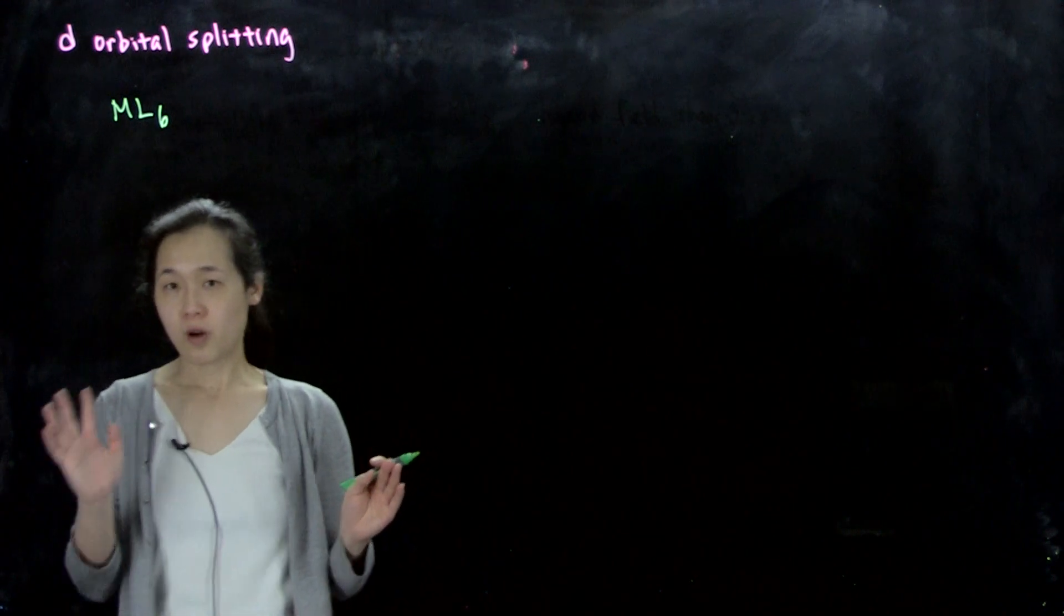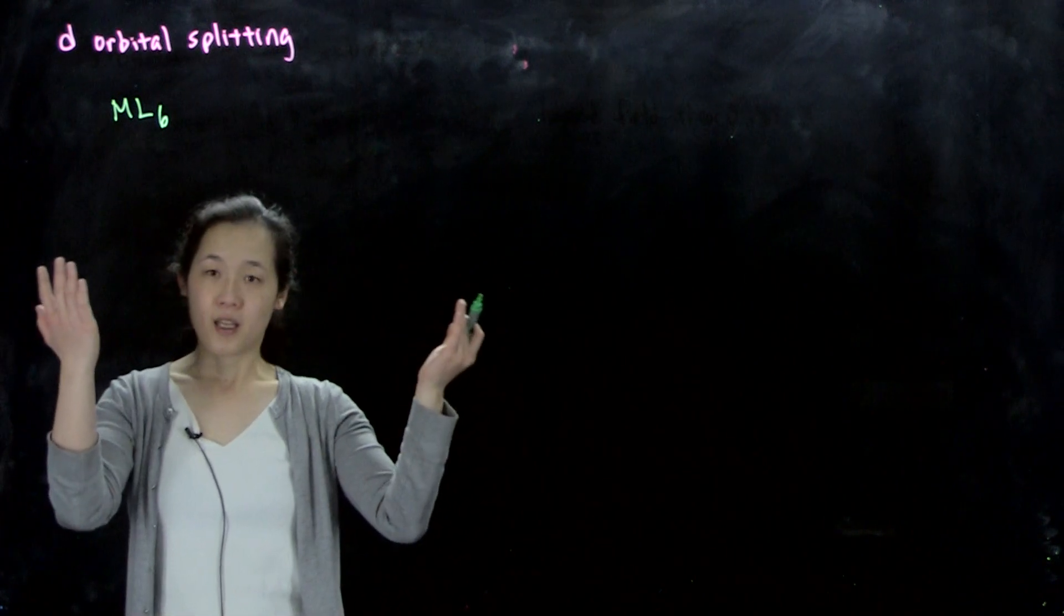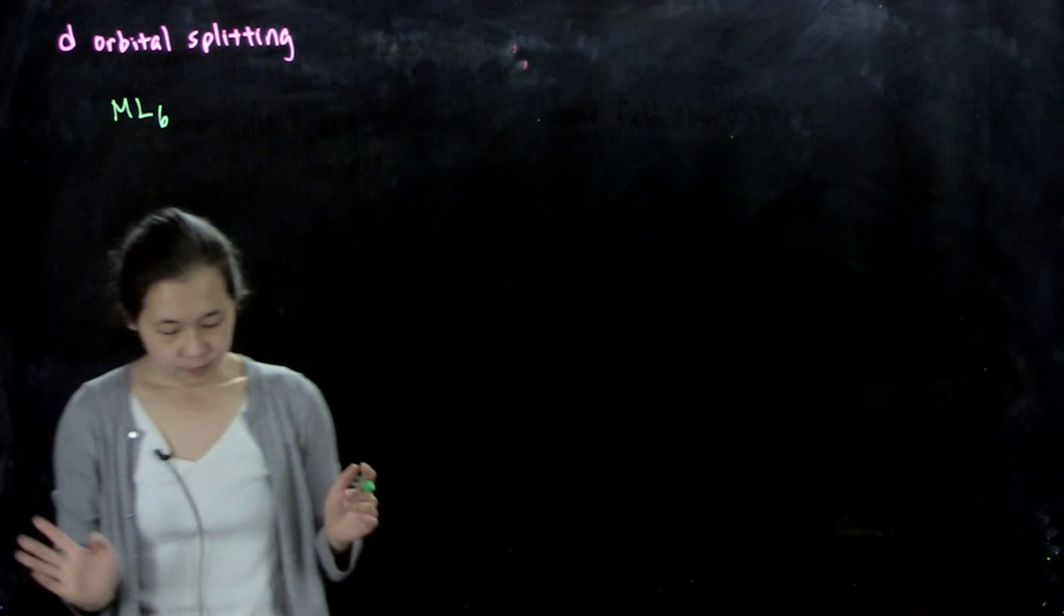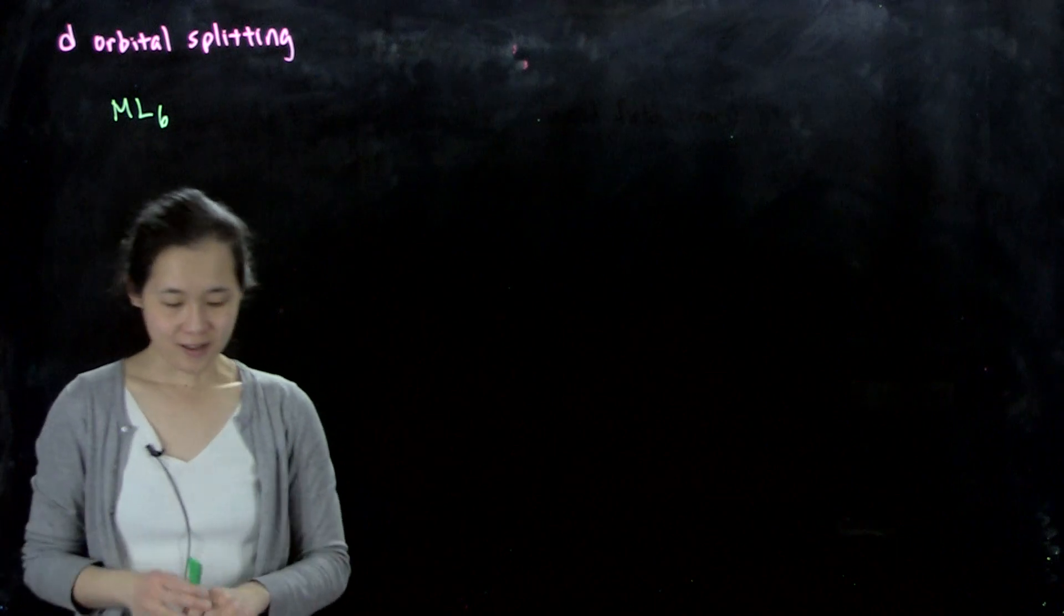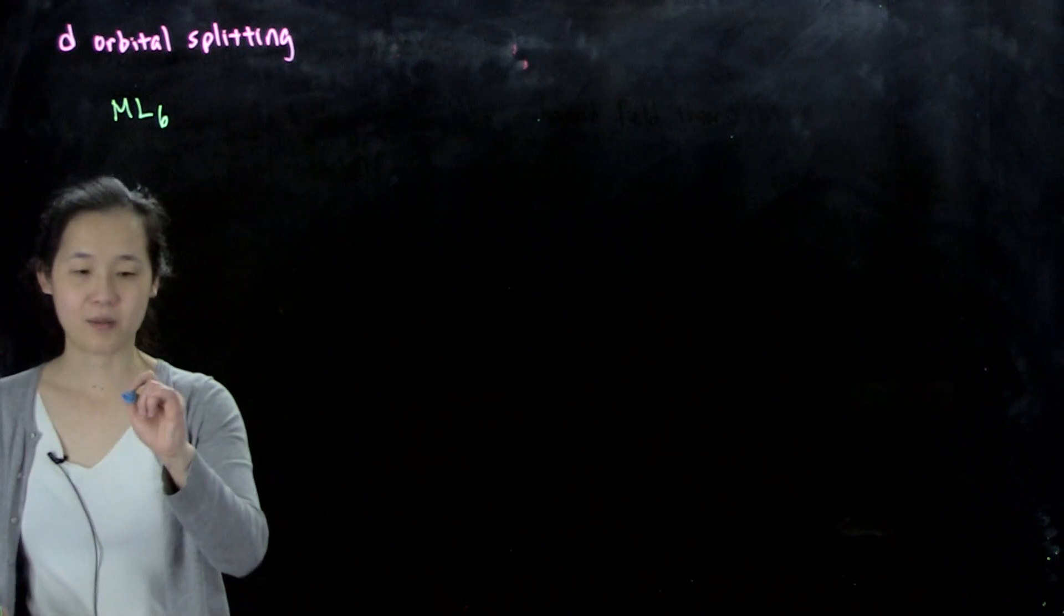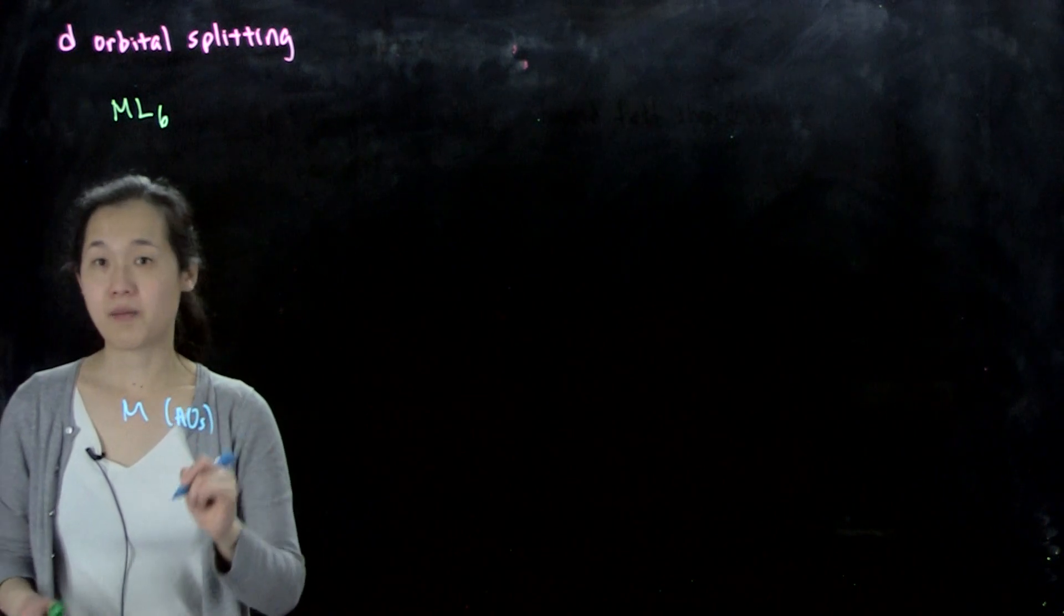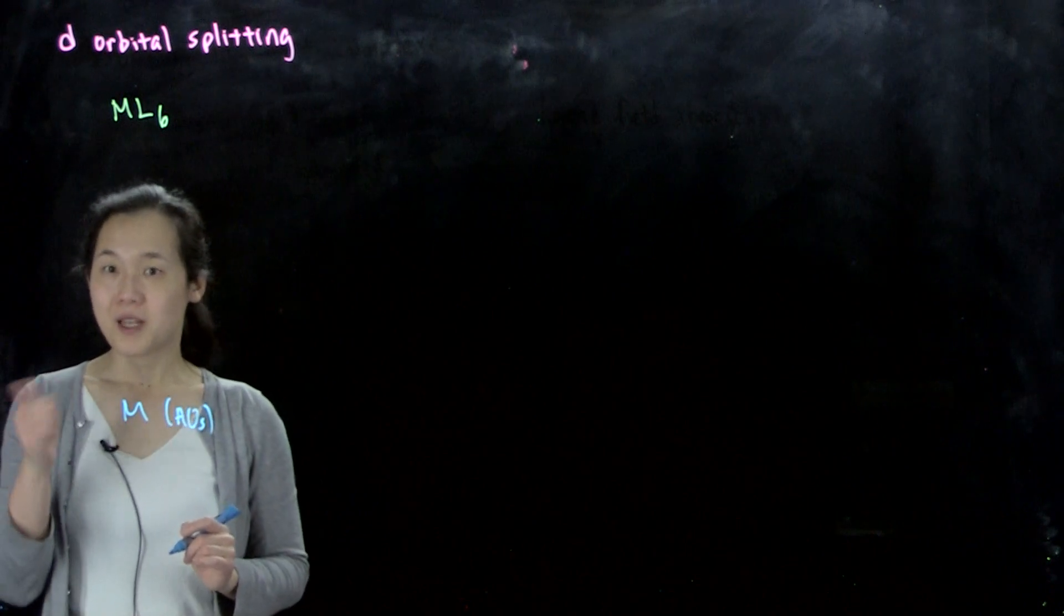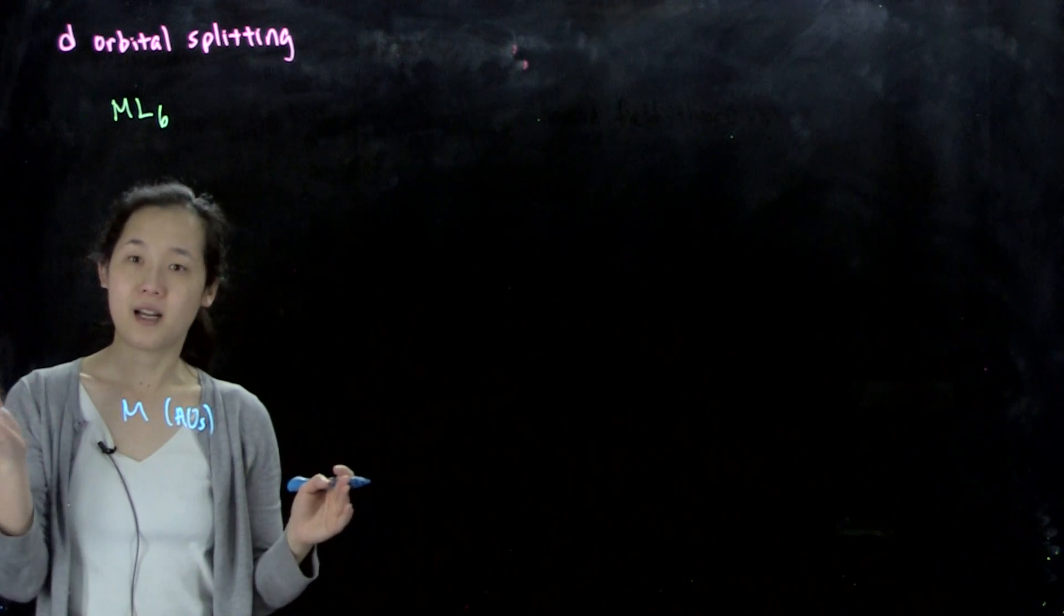Just like what you've done before with diatomic atoms, we can start and interact our different compounds. Typically, let's start with the metal on the left. So here's my metal over here. I'm going to put the atomic orbitals of my metal. So for a transition metal, let's say our third row, our first row of transition metals, so 3d elements.